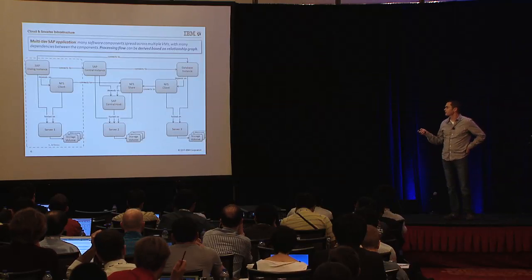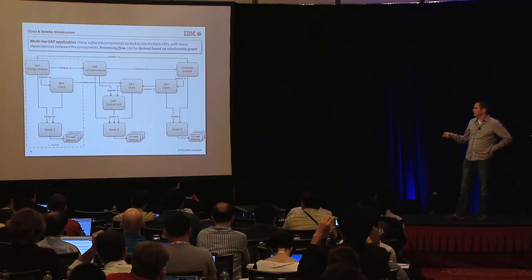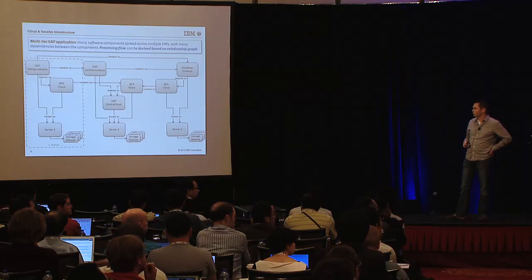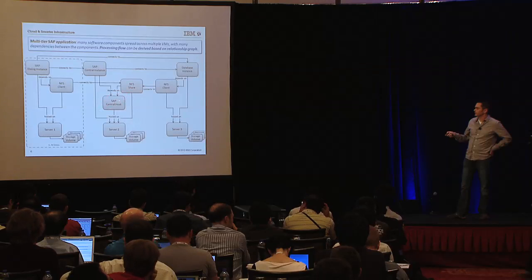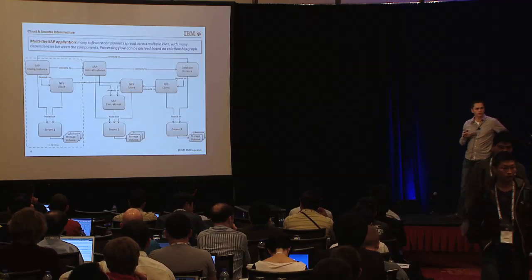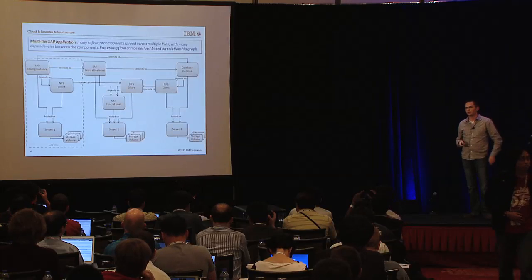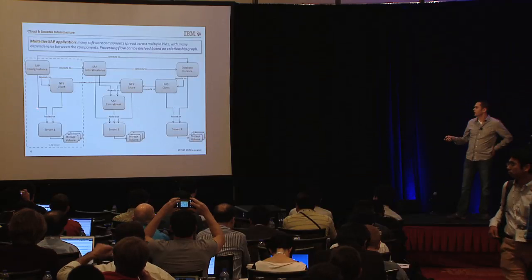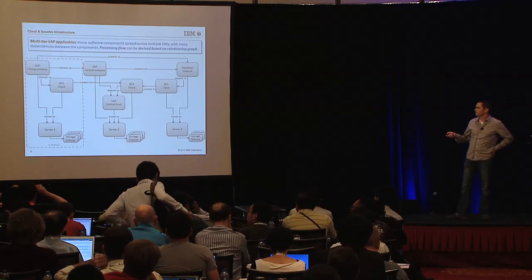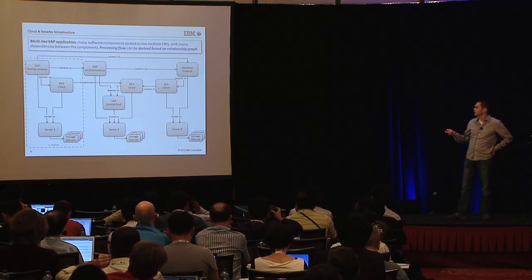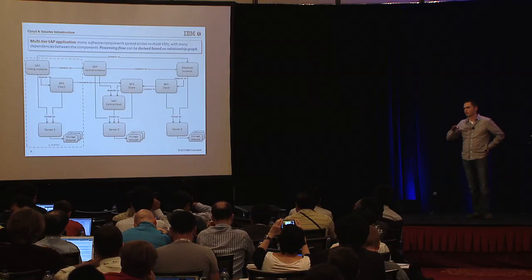The next example is more complex: a multi-tier SAP application. Three tiers — one server hosting the database instance with storage volumes attached per SAP practices; a central instance hosting a central host component that shares configuration data and binaries; a sub-central instance for logon and load distribution to dialogue instances; and dialogue instances handling actual user sessions. There's a connection between all of them via NFS — the central host shares binaries and config data used by the database and dialogue instances. It's quite a complex graph of components and dependencies.